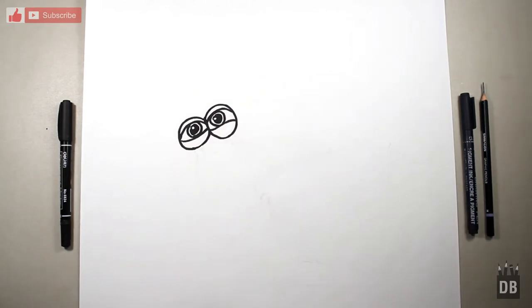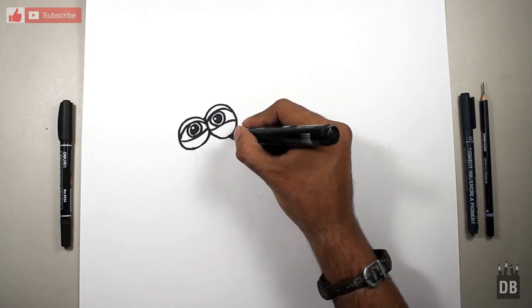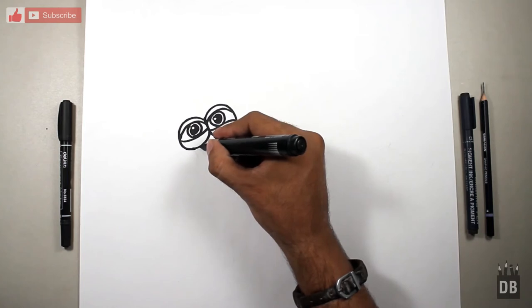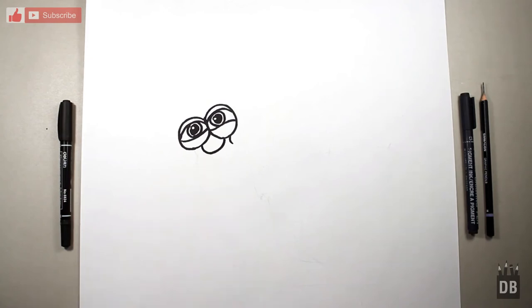The eyes are ready. Now we have to link with the body. To link the body, make a curve line like this and a U shape. You can also say that a smile shape.